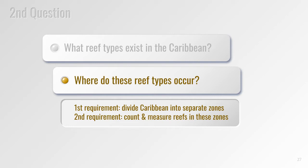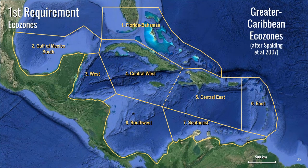We've classified and counted all reef types in the Caribbean, so now we can move on to the second question: where do these reef types occur? To answer this we need two things: first, to divide the Caribbean into separate zones so we can see how the distribution changes, and second, to count and record what reef types occur within each zone. This has been done by Spaulding in 2007, who recognized several distinct ecozones, so we don't need to reinvent the wheel.